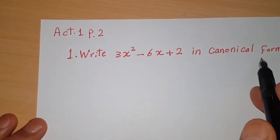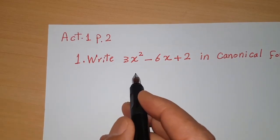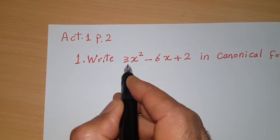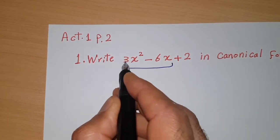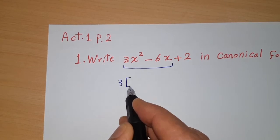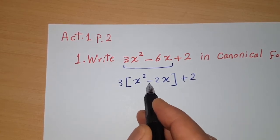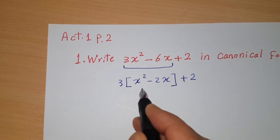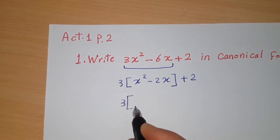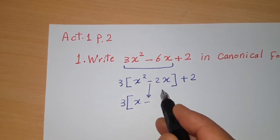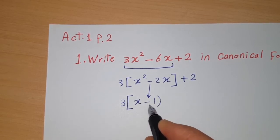Activity one, page two: write 3x² - 6x + 2 in canonical form. The method I'll follow is easier than the method in the book. First, take a as a common factor from the first two terms: 3(x² - 2x) + 2. To make a complete square inside the bracket, write x squared, take half of 2 which is 1, and write (x - 1)².